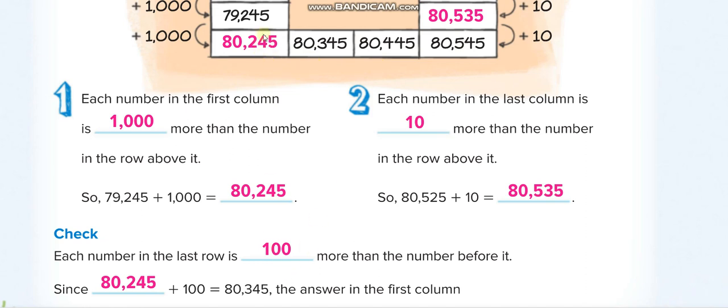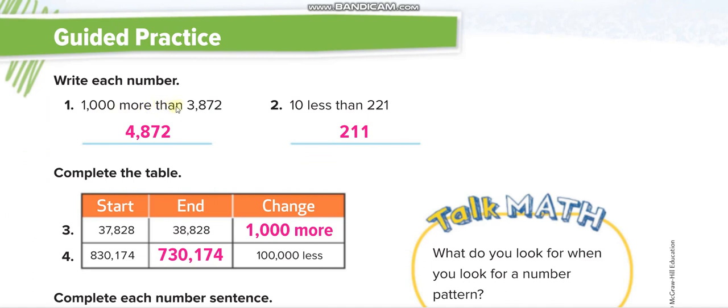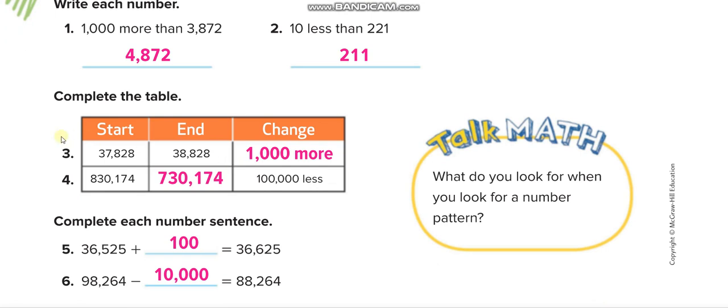Down here, 1,000 more than 3,872 is 4,000, 1,000 more, so 4,872. 10 less, so 221 minus 10, so 2 will be 1, which is 211. From 37 to 38,000, 37,000 plus 1,000 equals 38,000, 1,000 more.